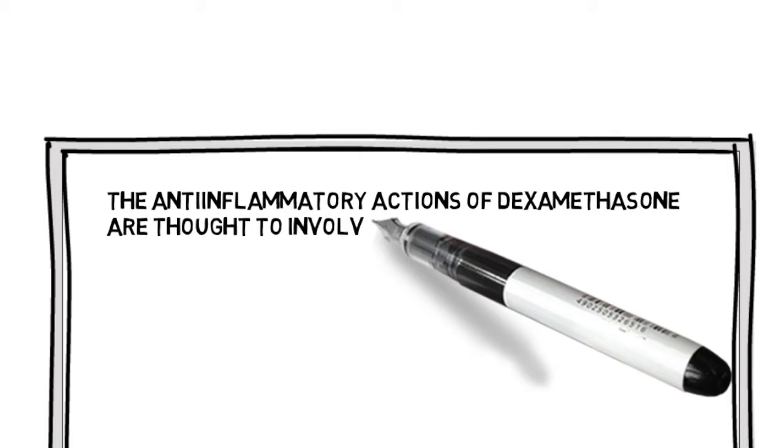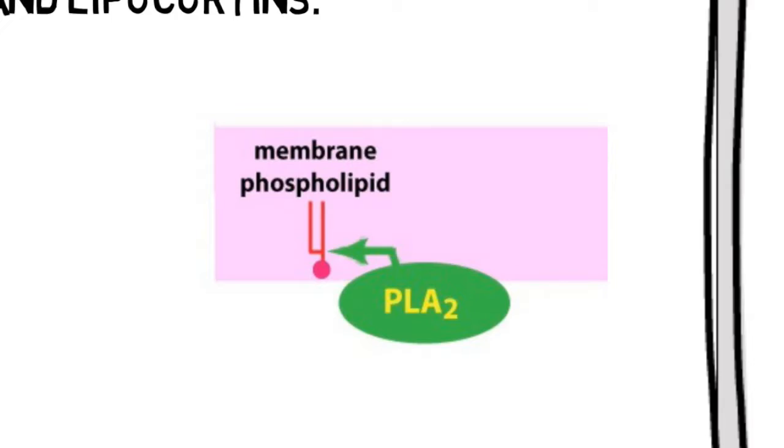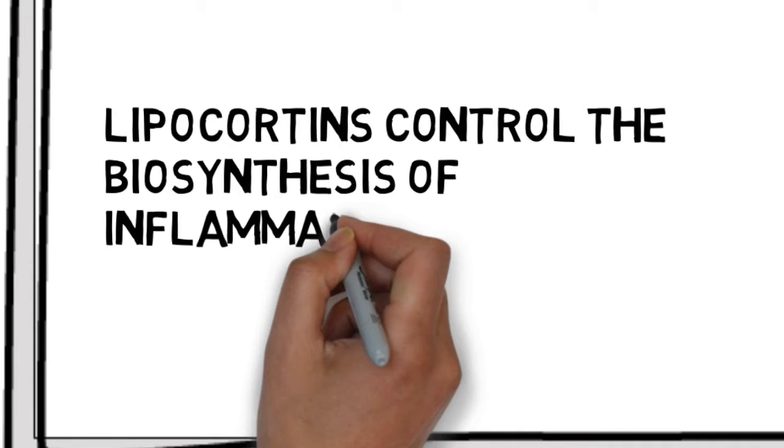The anti-inflammatory actions of dexamethasone are thought to involve phospholipase A2 inhibitory proteins and lipocortins. Lipocortins control the biosynthesis of inflammatory mediators such as prostaglandins and leukotrienes.